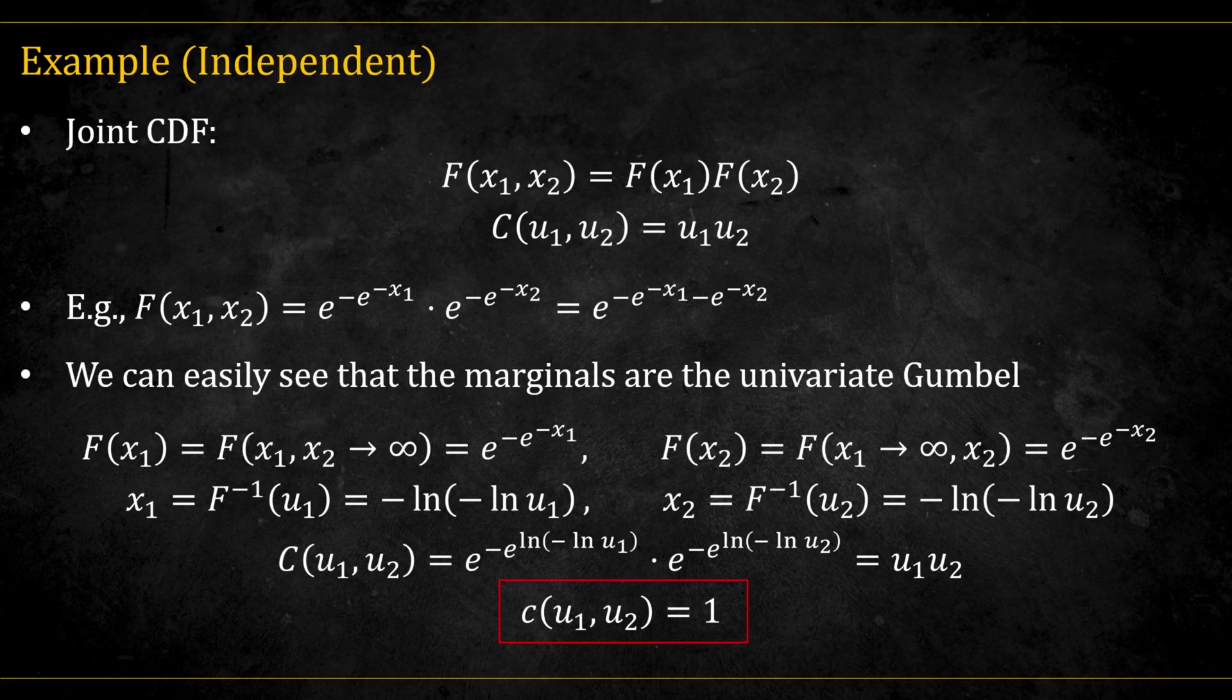Now that we understand what a copula is, let's return to the original animation and interpret what we're seeing. In all of these graphs, the marginals are the same. Both are standard Gaussians. What changes is the copula, which defines how the two variables are linked.